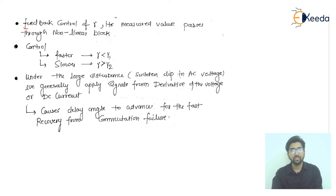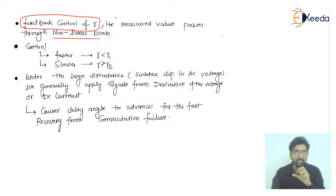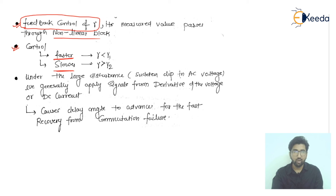For feedback control of gamma — the extinction angle — using feedback controlling schemes, the measured value passes through a non-linear block. Since we are using the predictive type, it is a straightforward procedure for linear and non-linear systems. The resulting value can produce faster or slower operation depending on requirements: if the gamma fed is less than gamma one it is faster, and if gamma is greater than gamma two it is slower.